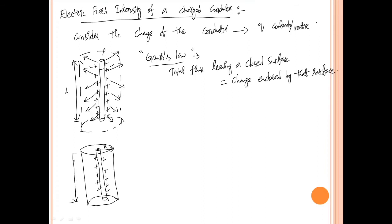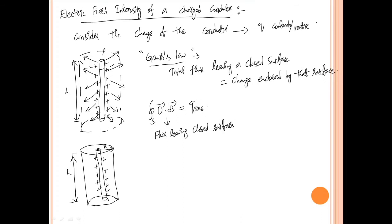Gauss's law mathematically is: ∮ D-bar · dS-bar = Q_enclosed. The closed surface integral of D·dS is the total flux leaving the closed surface, and it equals the enclosed charge. Since the field is in the radial direction away from the charged conductor, we can write D-bar as D_ρ · a_ρ-bar.